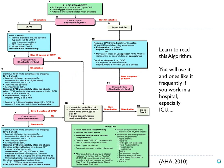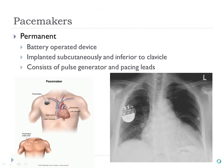In a code situation, a prudent person would look at the H's and T's — things likely causing the arrest that we might be able to correct quickly. Those are listed on the algorithm. The patient who might need a pacemaker is a person who is in a block.